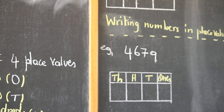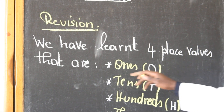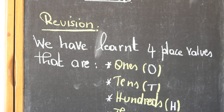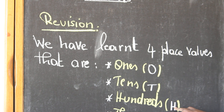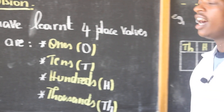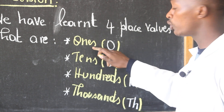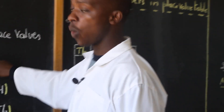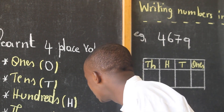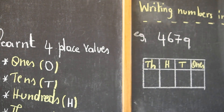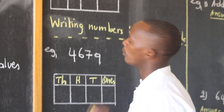Dear friends of mine, do you remember that we studied four place values in mathematics? Do you remember them? I can show you here. We have learnt four place values: ones, tens, hundreds, and lastly thousands. We said that attention was to be put on the endings. So we say ones shortened by O, tens shortened by T, hundreds represented by H, and then thousands with TH. These are written in a table called the place value table.